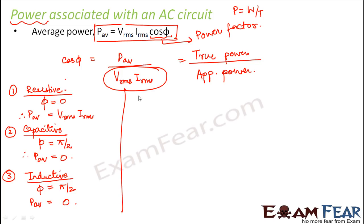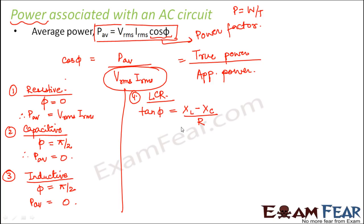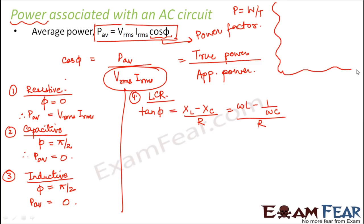Now let's talk about a more complicated circuit — the LCR circuit, where we have an inductor, capacitor, and resistor all connected in series. In this case, there is no specific fixed value of φ, but we calculate φ using the expression: tan φ = (X_L − X_C) / R, where X_L is ωL and X_C is 1/(ωC), so tan φ = (ωL − 1/ωC) / R.